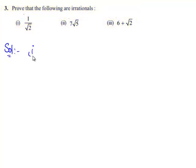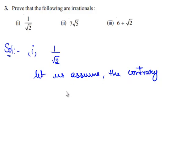We shall consider the first bit. So we need to prove that 1 by root 2 is an irrational. For this let us assume the contrary. That is, 1 by root 2 is a rational.